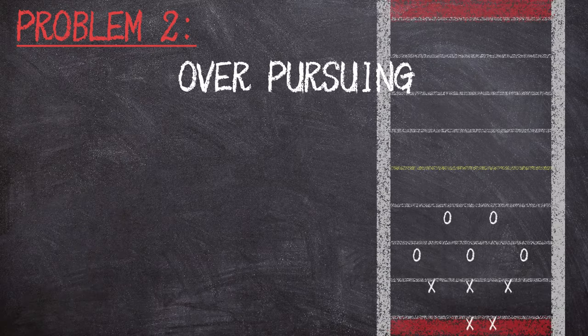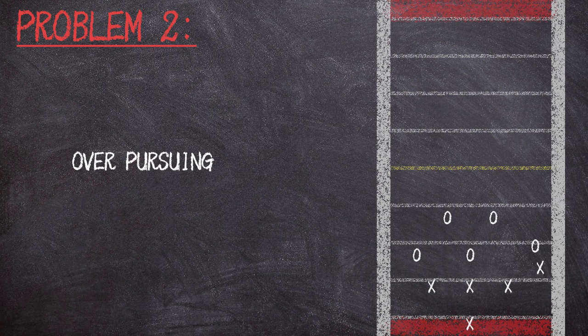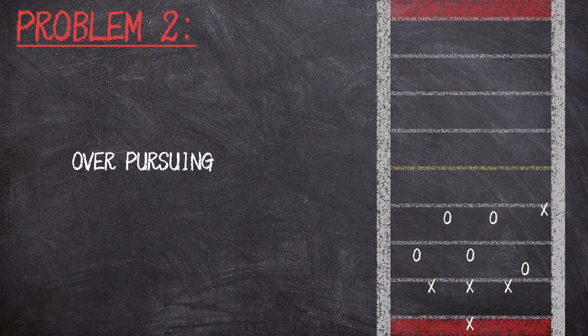Problem 2: Over-pursuing. Even when a player heads off a rusher, they may get over-zealous and over-pursue. This means they run right past the ball carrier.